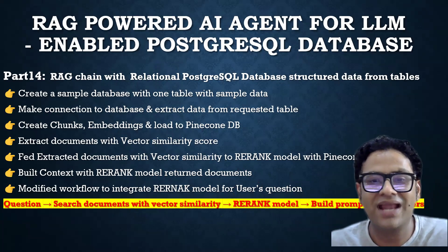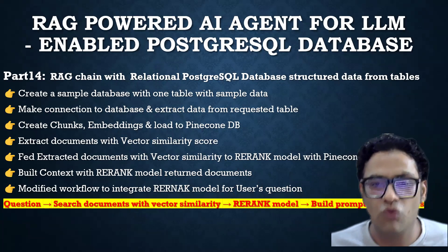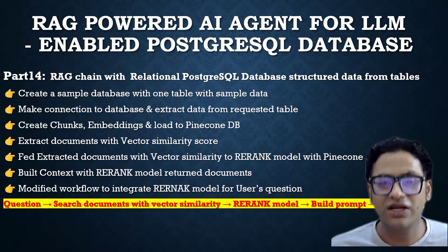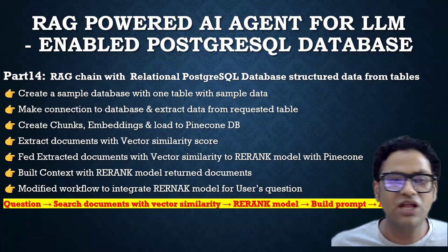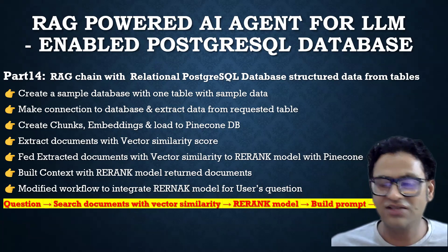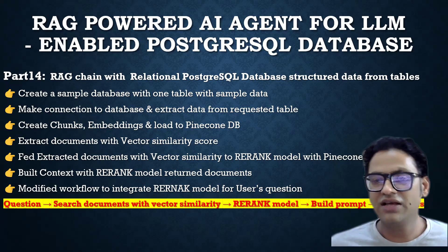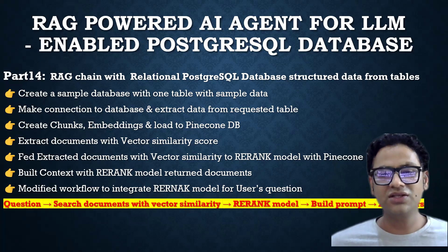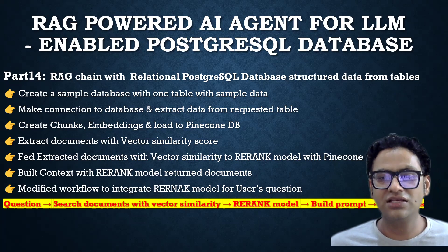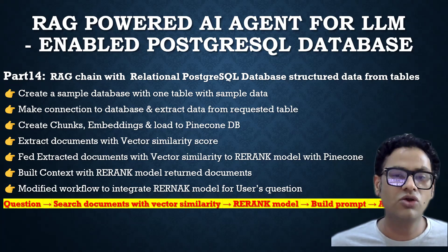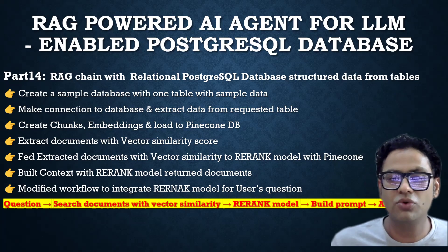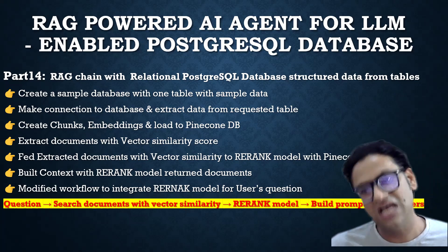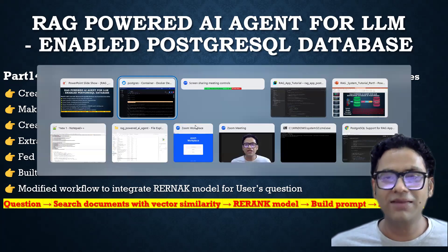If you want to understand the chunking, embedding, and vector database concepts, you can watch my other tutorial series where I covered those topics. The rest of the logic looks the same — we retrieve documents with a vector similarity score, rerun with the rerank model for more accuracy. Whenever a query comes in, context is created, fed to the rerank model for a more accurate context, and then we make a request to the LLM to get a precise answer.